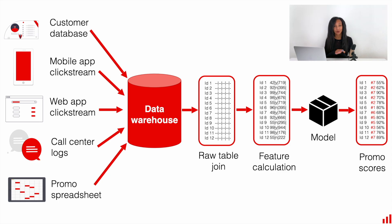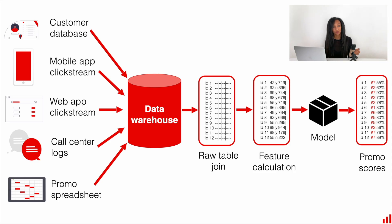For example, you might want to use data from the customer database, from mobile application clickstream, from web application clickstream as well, some call center data, and a promo spreadsheet which is manually created by some product managers. Then you will need to unify those data, place it all into a data warehouse, then perform some joins, do some feature engineering, and then feed this clean table into your machine learning model so that it can generate outputs.